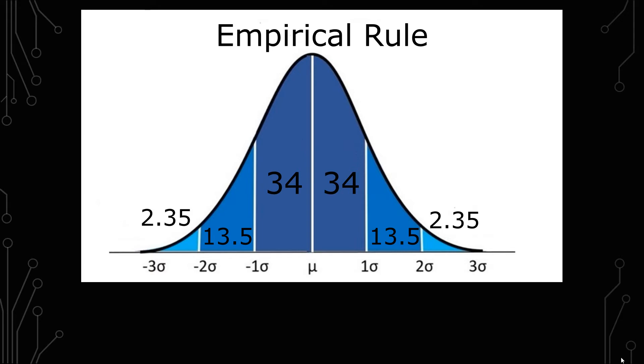Hi, welcome back to Learn2Stats. Today we're going to be going over the empirical rule, also called the 68, 95, and 99.7 rule. We're going to go through a few examples, but first let's get into the empirical rule.